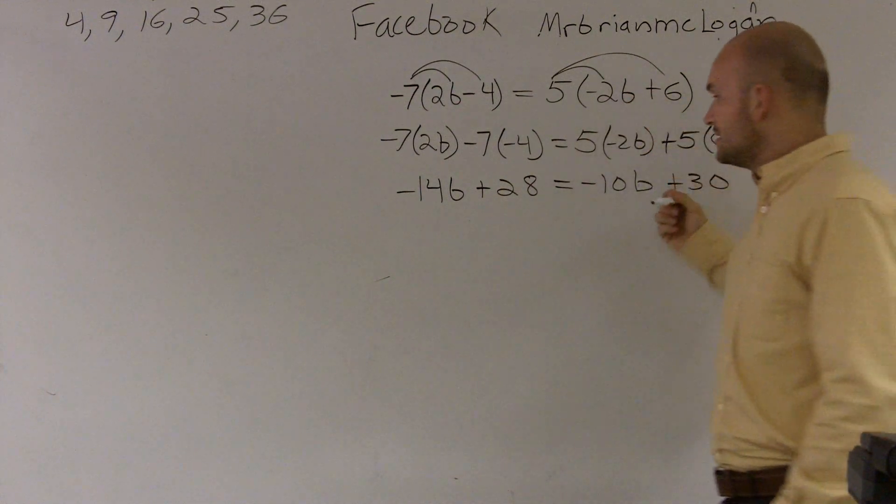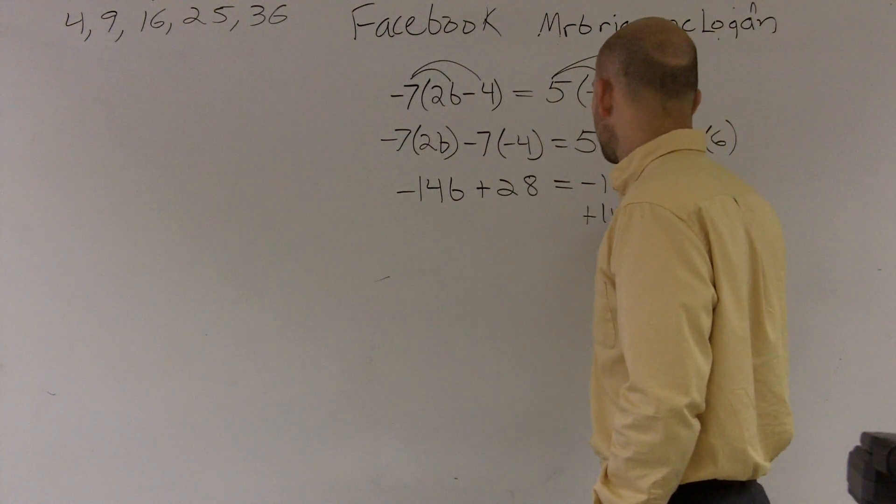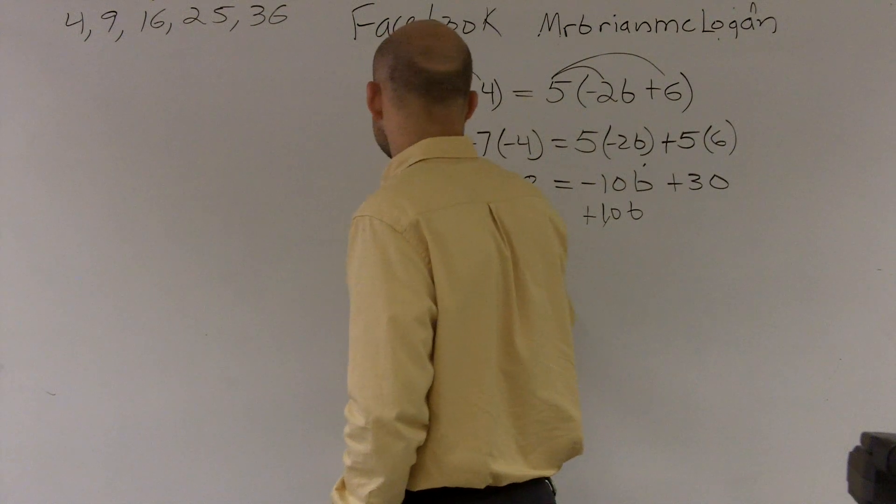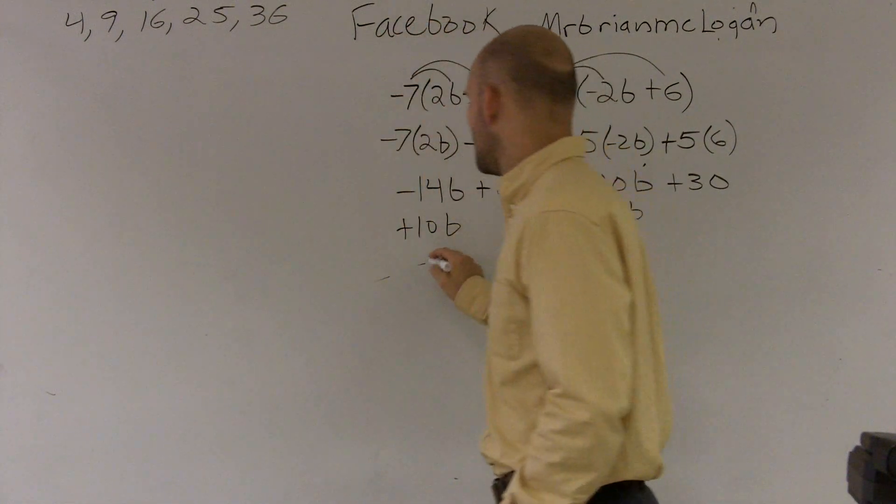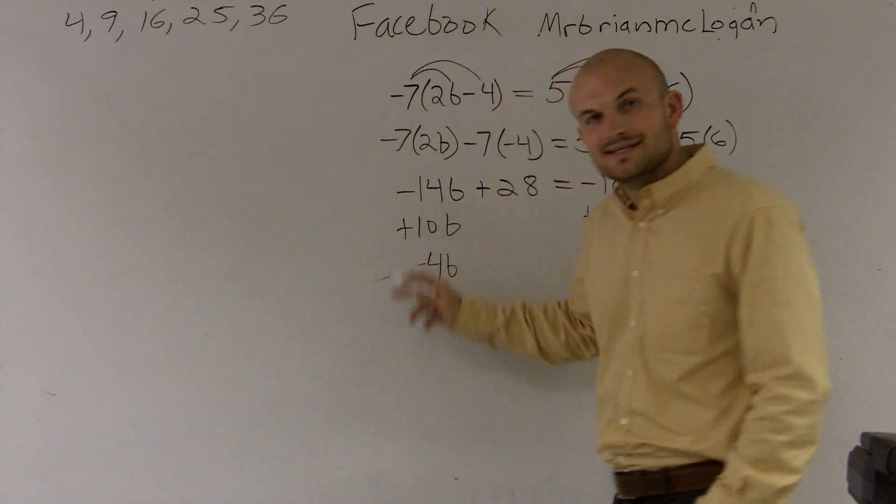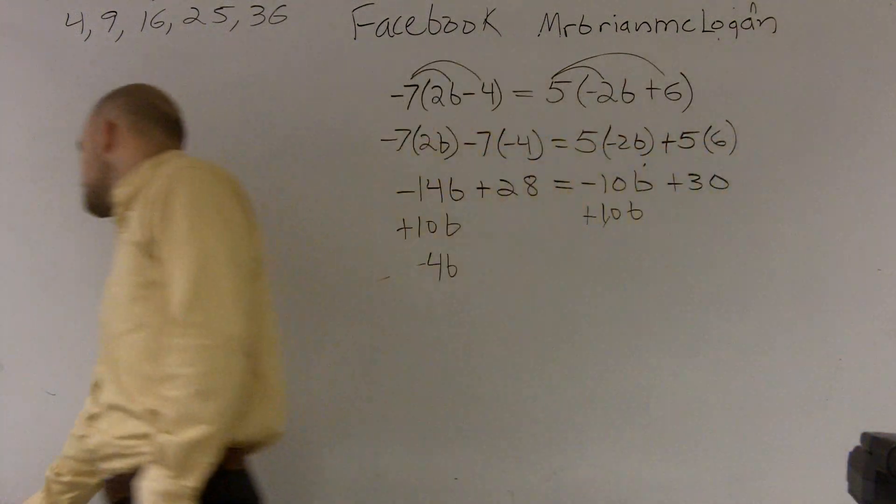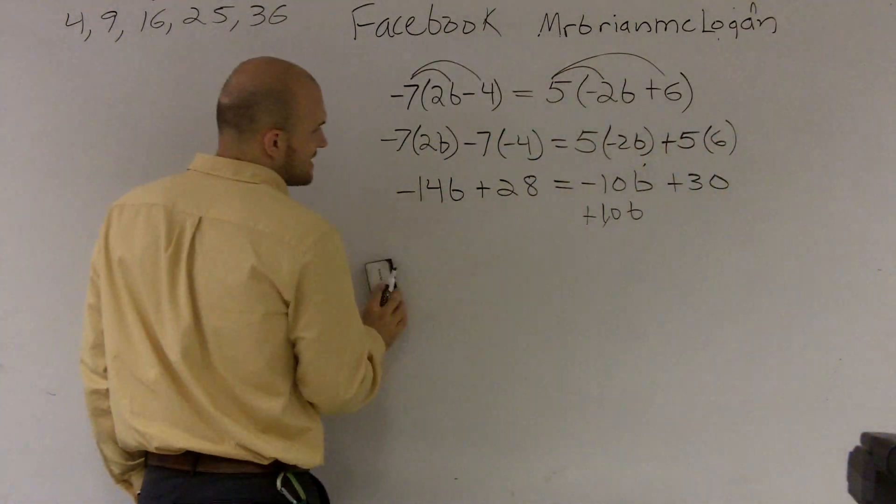Since I have a negative 10b, to get rid of that, if I add 10b, I'll cancel out the 0. And if I add 10b to the other side, this gives me a negative 4b. Well, that's negative on the left side and I don't want that. So I'm not going to add 10b on both sides.